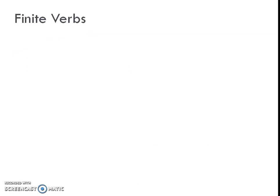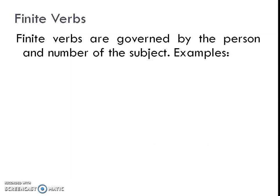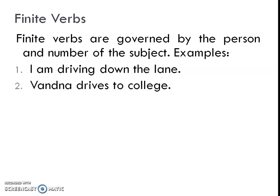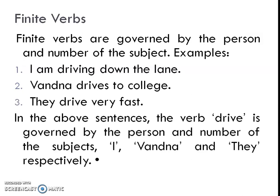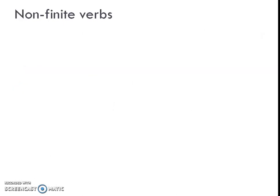Now let's study finite verbs. Finite verbs are governed by the person and number of the subject. Examples: I'm driving down the lane, one drives to college, they drive very fast. In all these sentences, friends, the verb 'drive' is governed by the person and the number of the subject — I, one, and they respectively. So the verb is changing according to the subjects; that is called a finite verb.